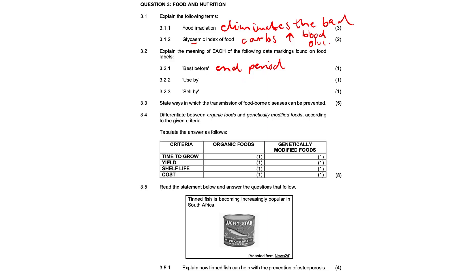Next, the use by date. Products should not be consumed after this date. It shows the period for which the product will be of good quality or safe to eat. I know for a lot of you it's like these all mean the same thing — but you've got to know these little definitions.